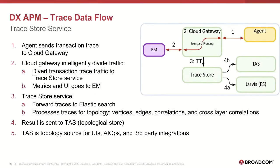The trace processing flow: the cloud gateway forwards transaction traces to the trace store service. The EMs are no longer processing transaction traces — EMs only process alarms, calculators, and serve workstation connections. The trace store service processes transaction traces to extract topology for storing in TAS, and also sends the traces to Elasticsearch for use in visualization and user interfaces of ATC, APM Team Center. Having the trace store service allows us to efficiently process transaction traces at scale by simply scaling the trace store service. You can assess its utilization in the cluster management UI.